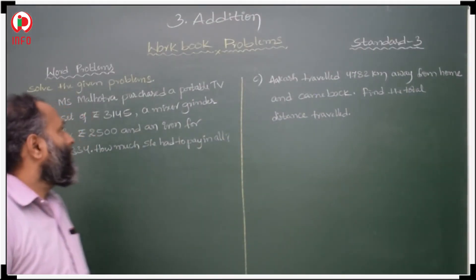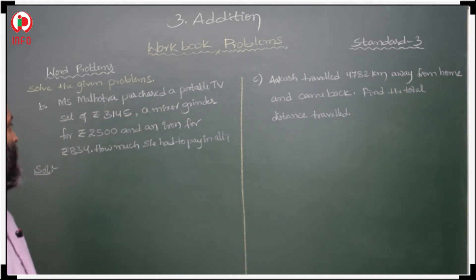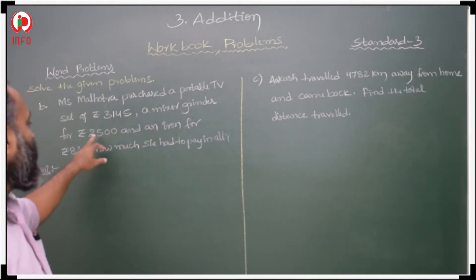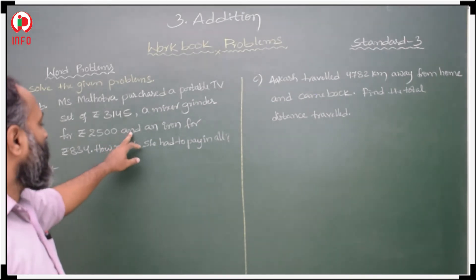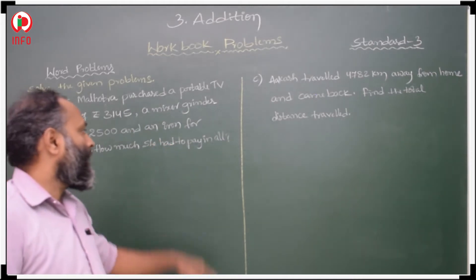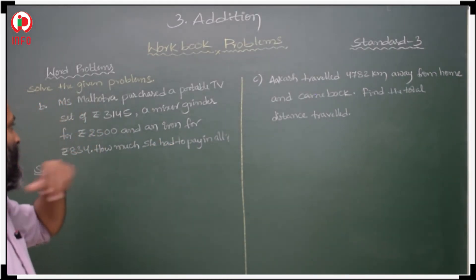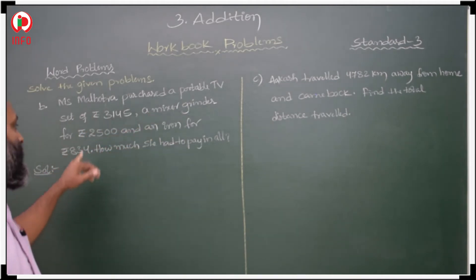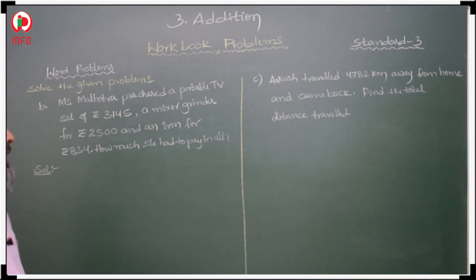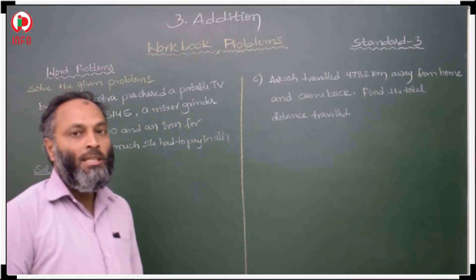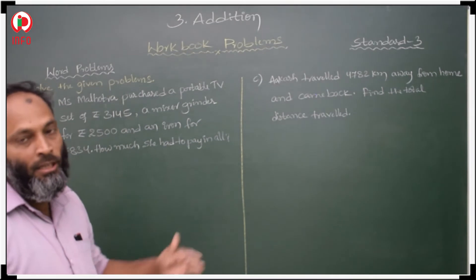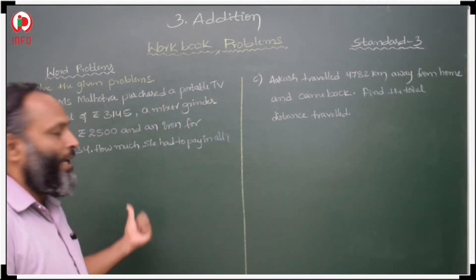Second word problem: Miss Malhotra purchased a portable TV for 3145 rupees, a mixer grinder for 2500 rupees, and an iron for 834 rupees. How much did she pay in all? TV cost, mixer grinder cost, and iron box cost are given, so we add all three articles.